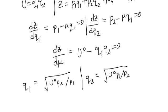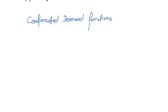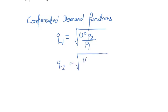homogeneous of degree zero in prices. Hence the compensated demand functions can be written in a clean manner as root over U⁰·p2/p1 and q2 as root over U⁰·p1/p2. This kind of representation is very important when it comes to this kind of theoretical questions and derivations.